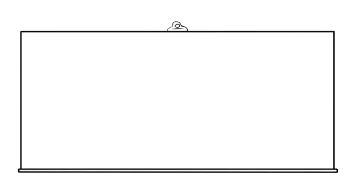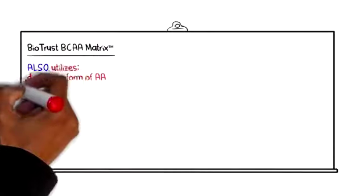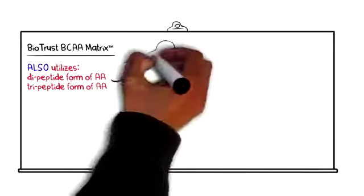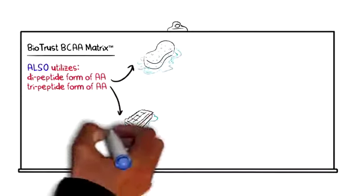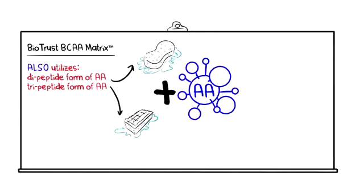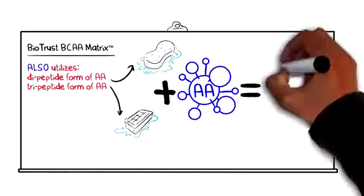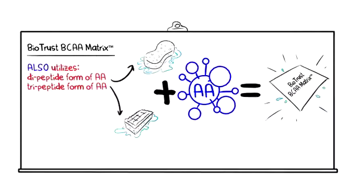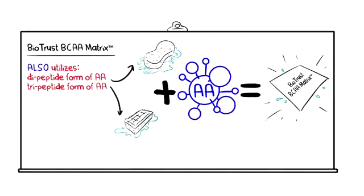To overcome this, we also utilize dye and tripeptide forms of each amino acid, as these forms utilize a different absorption pathway than freeform aminos. By combining freeform BCAAs and peptide-bonded BCAAs, BCAA matrix significantly increases absorption by reducing absorption competition and overload.